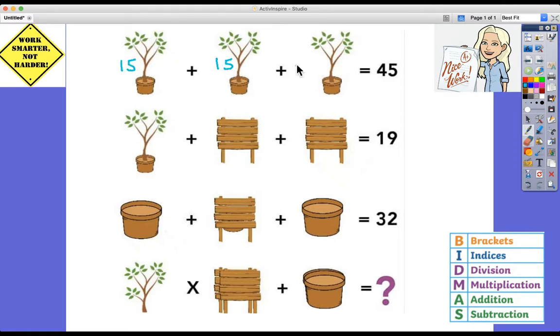So each one of these plants is worth 15. We've got another plant here, which looks identical. Pretty sure it's identical. And we need to make it up to 19. We've got two of these identical pictures here. So the difference between 19 and 15 is 4 divided by 2. So each one of these must be 2.